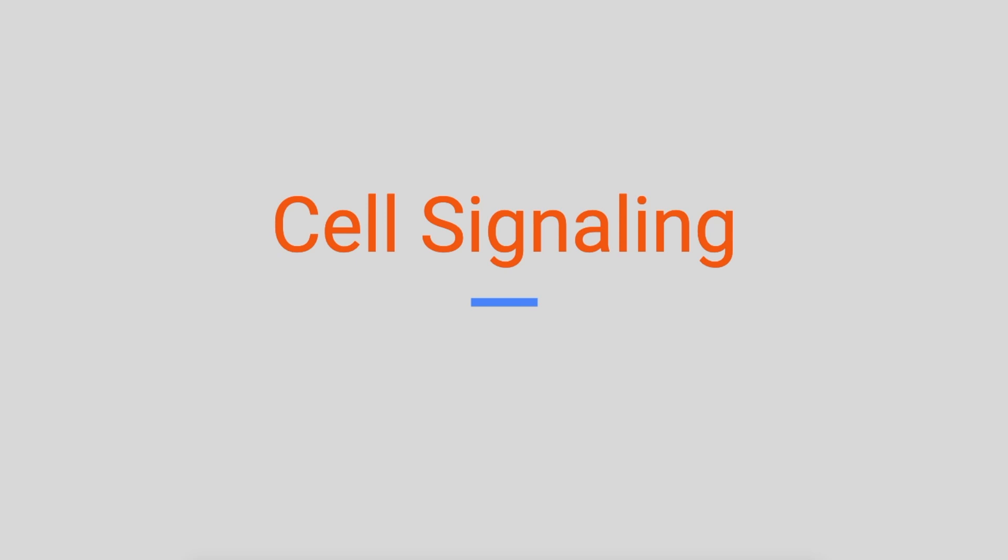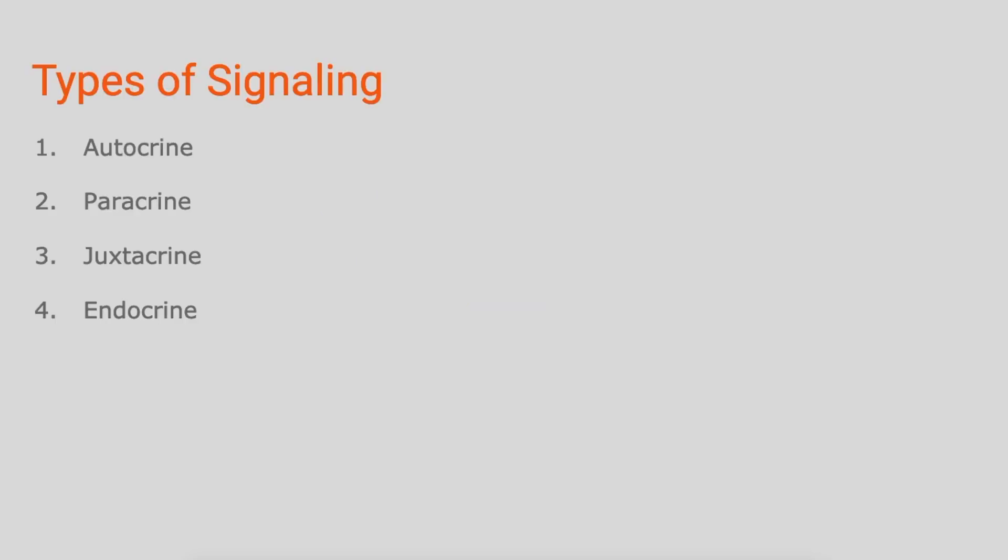This video is going to quickly go over the different types of cell signaling. There's four main types of signaling.